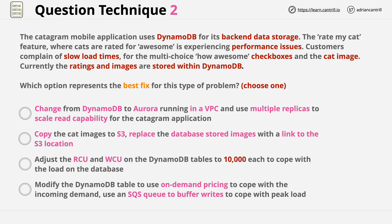Let's step through these answers and investigate how well they fit the question. Starting with the bottom one: from the question text I think the problem is due to storing images within DynamoDB — all that binary data is slowing down reads from the database. Modifying the DynamoDB table to use on-demand pricing is a potential fix for these performance issues. With on-demand you don't have to worry about manually setting capacity; it's handled by the product and you're billed based on requests made to the database.